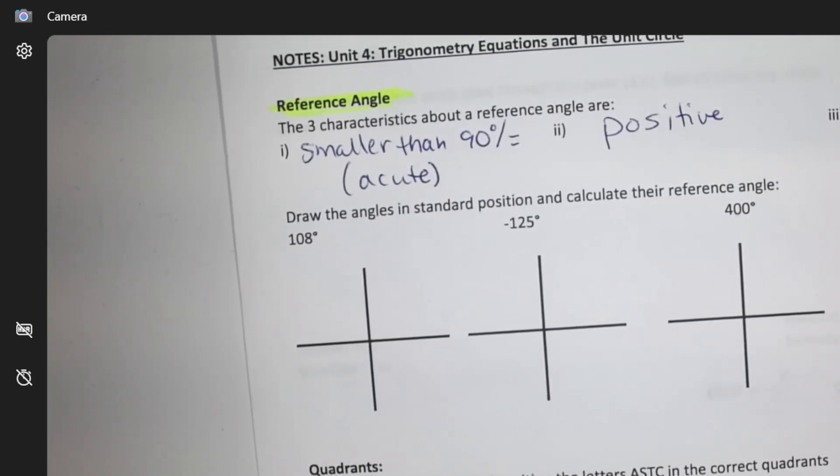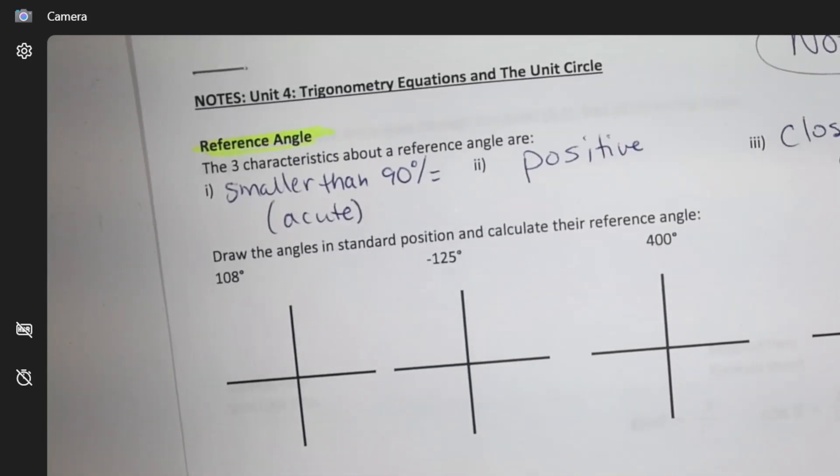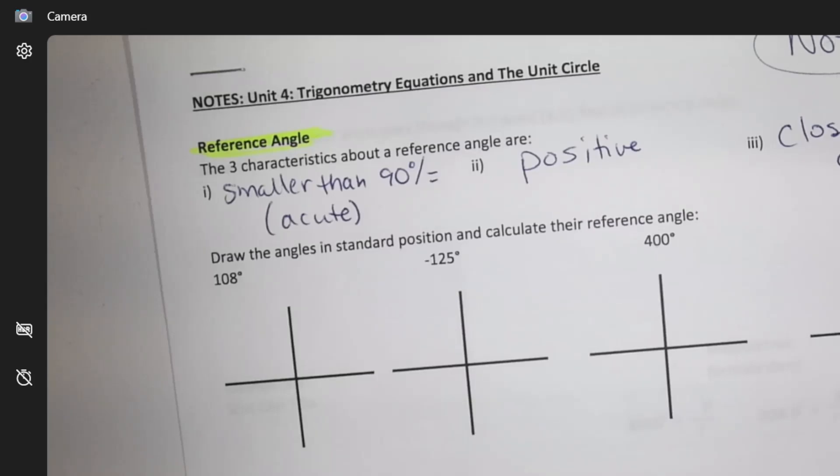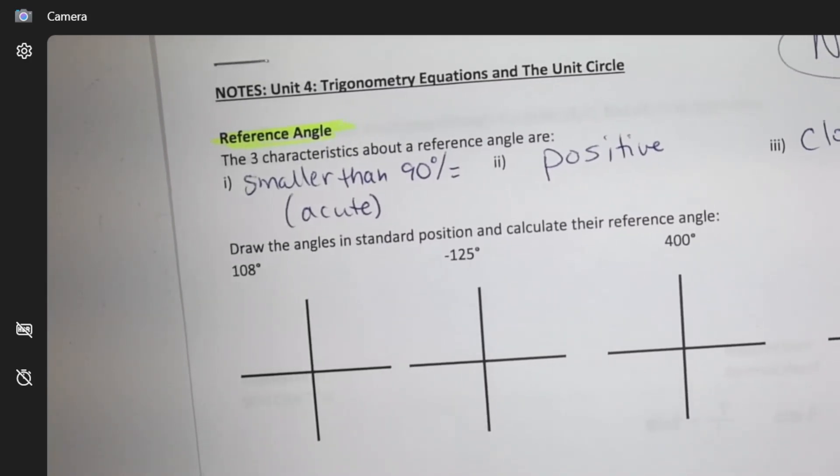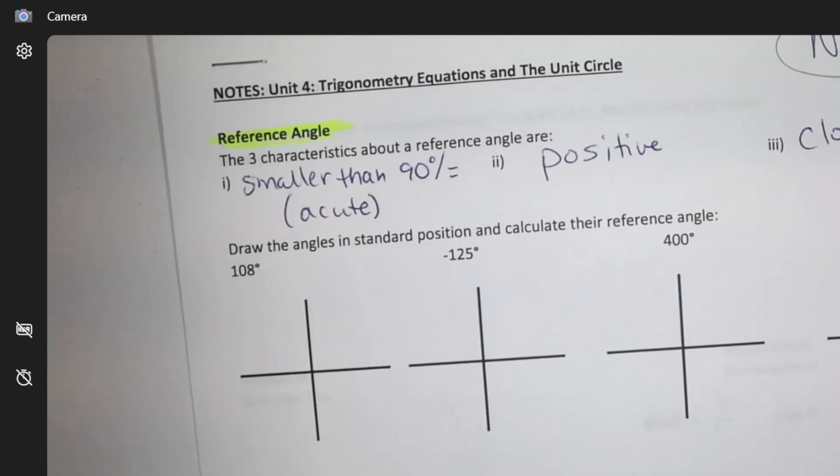And it is going to be the closest to the x-axis distance. So there are three things to know: it can't be more than 90, it's got to be positive, and it's got to be to the closest x-axis.